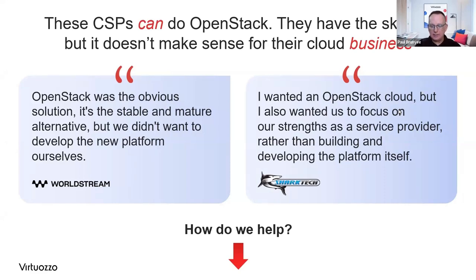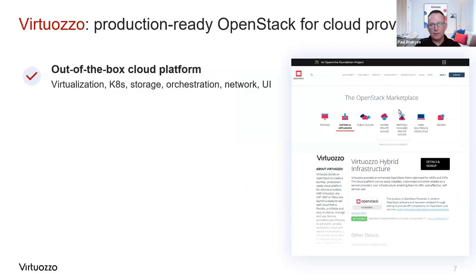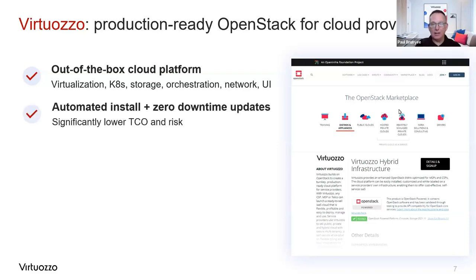This is where Virtuoso comes in - we've actually done the hard work for you. We use OpenStack, but we encapsulate that with a lot of other layers of software as well. Essentially, it's an out-of-the-box cloud platform that supports and enables your virtualized workloads. We support virtualization, virtual machines, Kubernetes, storage provisioning, and orchestration within the platform. We support networking from a software-defined networking point of view, and we wrap it all up in an easy-to-access user interface.